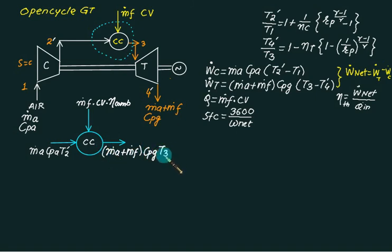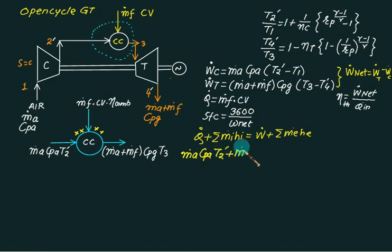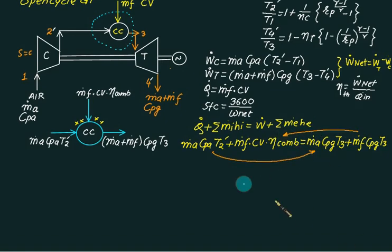Applying the steady-flow energy equation with no work output (combustion chamber has no moving parts) and no external heat loss, the energy balance gives: m-dot-a × cp_a × T2-dash + m-dot-f × CV × eta_com equals (m-dot-a + m-dot-f) × cpg × T3. Expanding the right side and rearranging terms to group m-dot-f and m-dot-a separately.